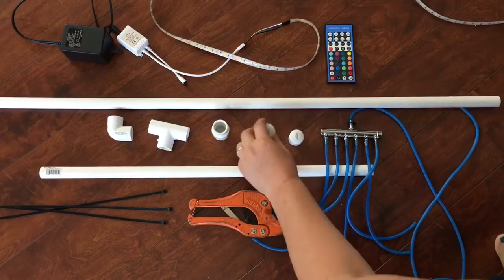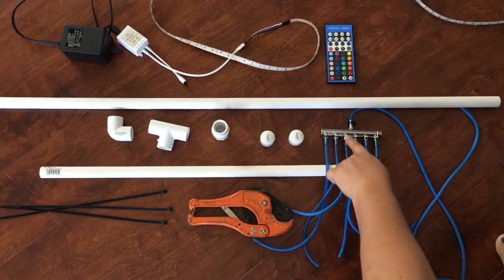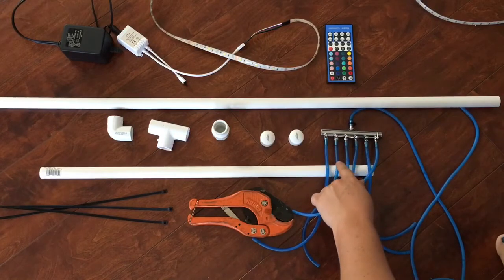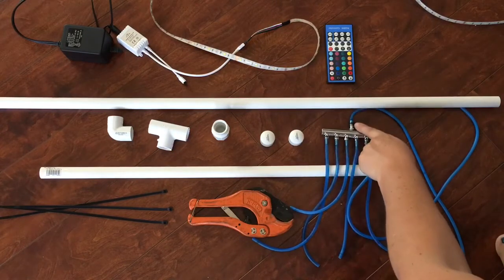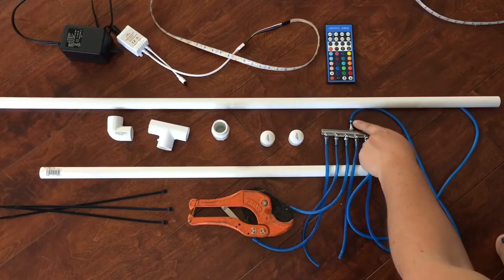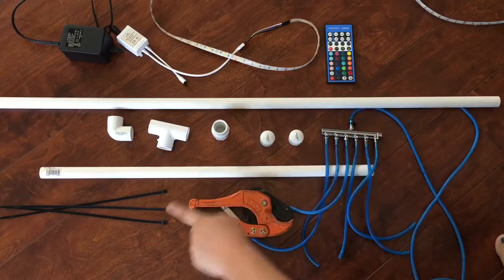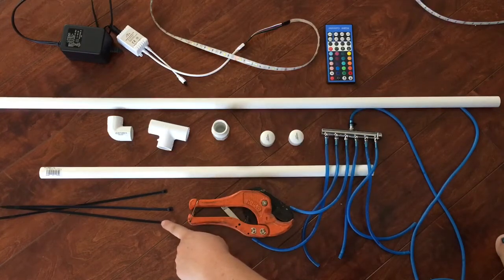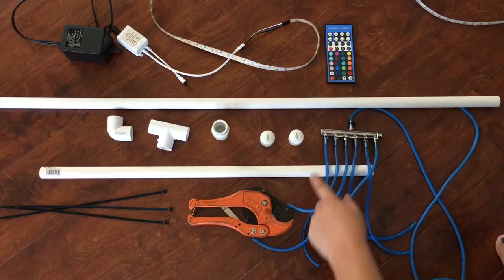You'll need two slip end caps, a six-way valve with airline tubing. This part you're going to have to heat to fit it on and then add a zip tie onto that. You're going to need three additional zip ties to attach this onto the post.